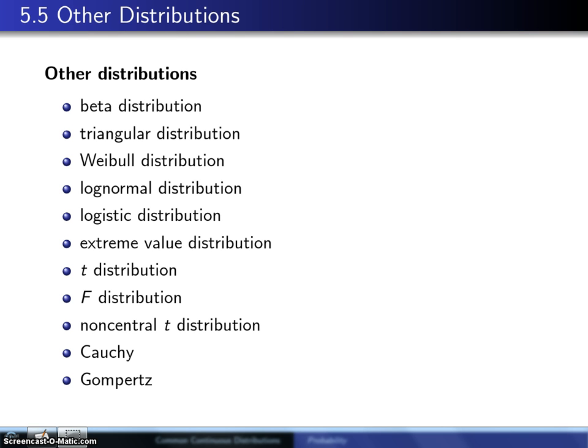There are dozens and dozens of other continuous distributions that arise in practice. Here are a few of them: the beta, triangular, Weibull, lognormal, logistic, extreme value, T, F, non-central T, Cauchy, Gompertz—the list goes on and on. This is only a subset.